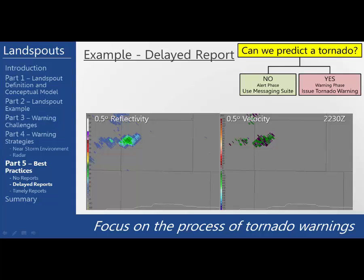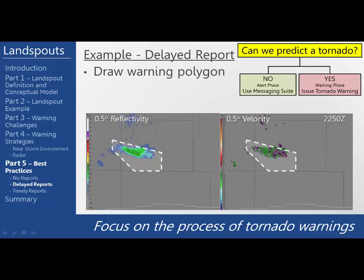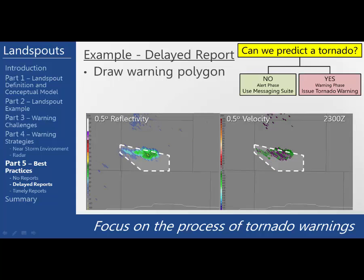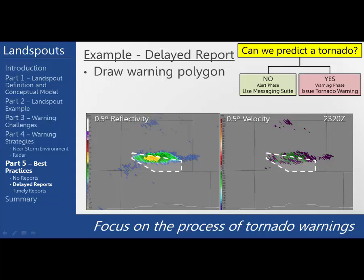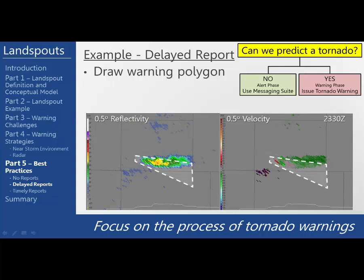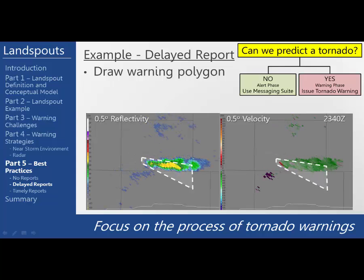Now let's go through the same chain of events, only this time there will be a delayed report. We'll go through the same thought process and use one or a combination of alternate messaging options to alert people of the potential for landspout tornadoes. We will draw up a warning polygon as it becomes more clear that the storm is strengthening and is tied to the boundary. Nothing has changed from the previous scenario, so our methodology should be the exact same. That methodology is to closely watch the radar and keep a tornado warning polygon drawn up for each scan.